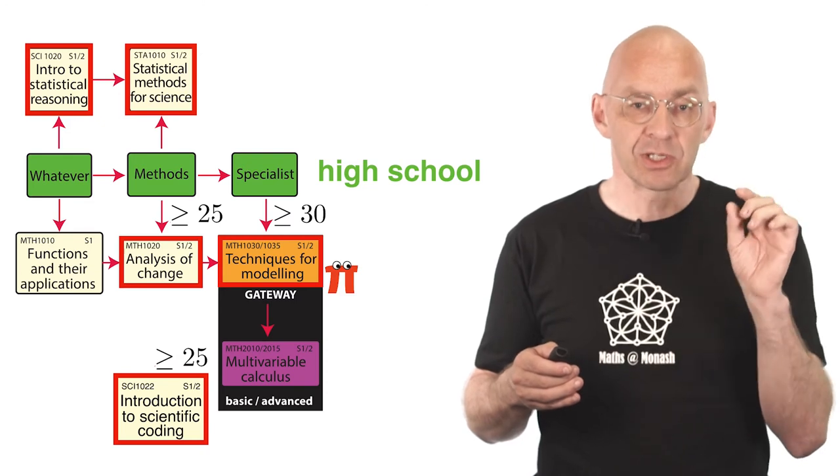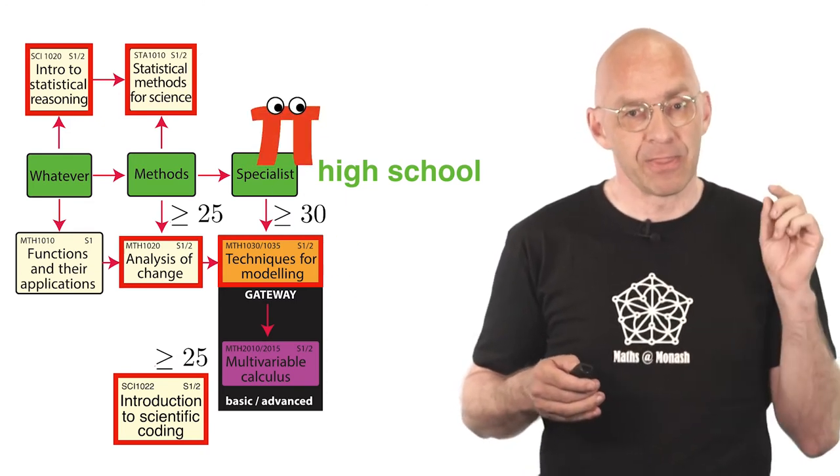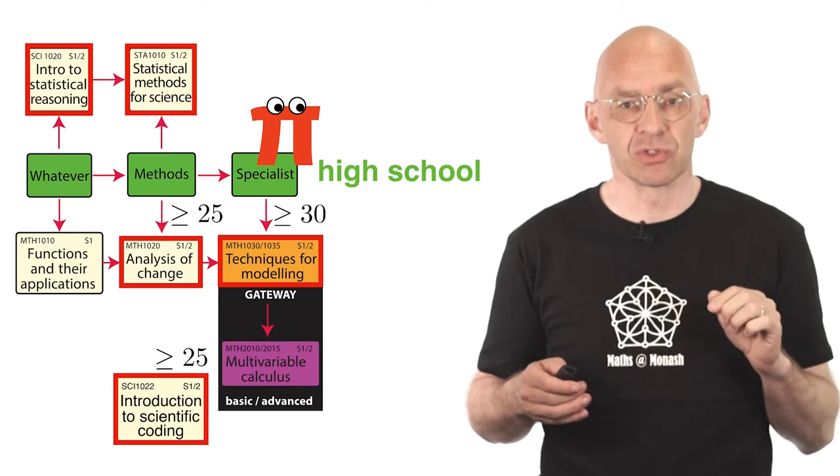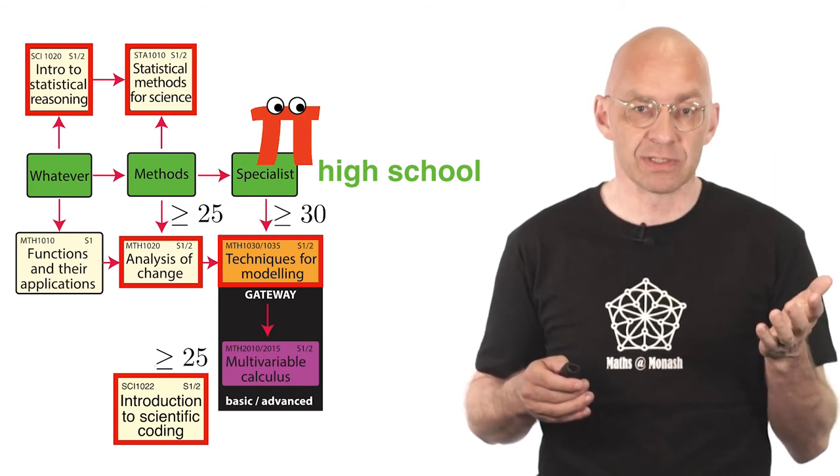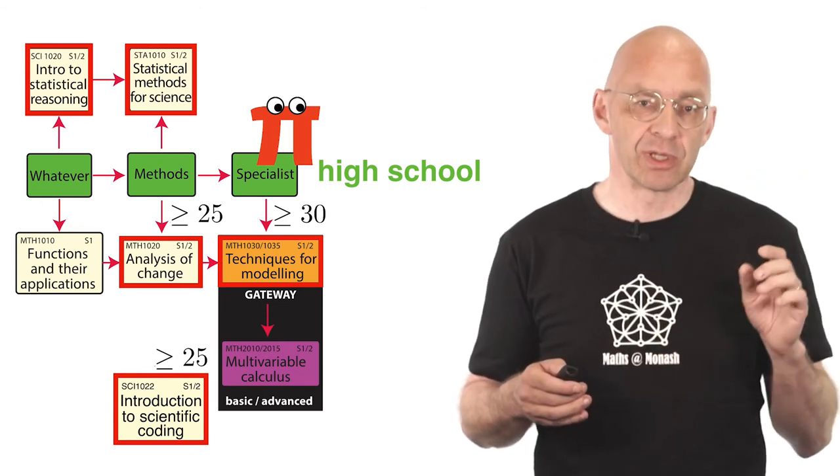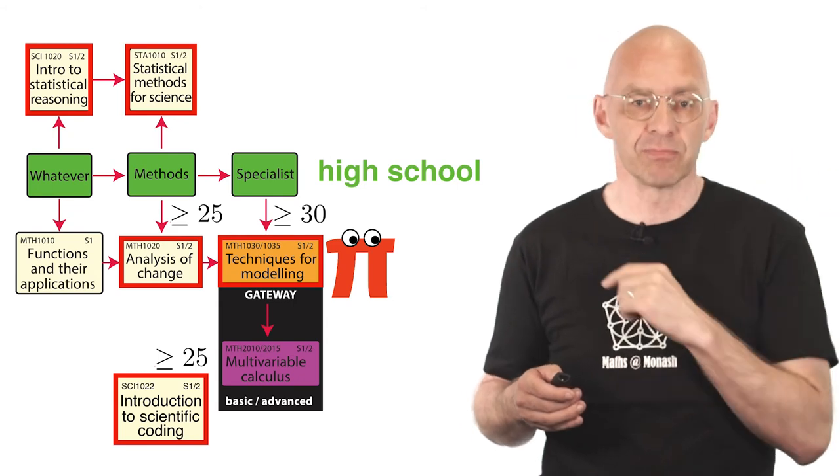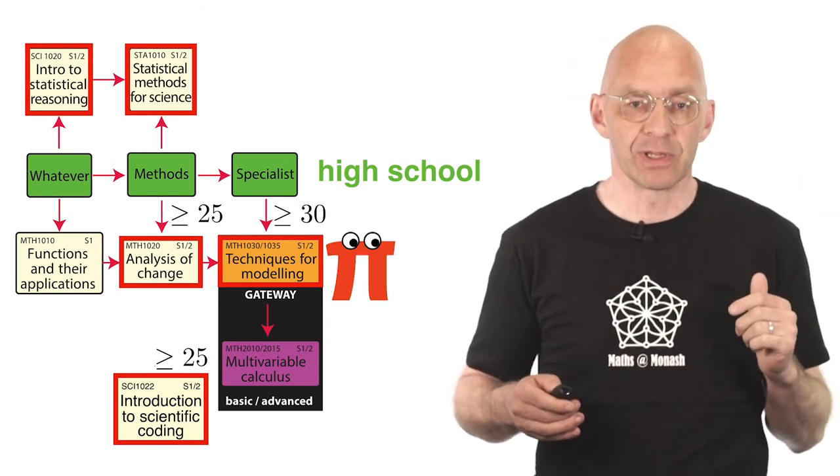If you arrive at Monash with specialist 3-4 or equivalent maths under your belt, then if in addition you scored at least a raw 30 in specialist 3-4, you should enroll straight away in the orange gateway unit techniques for modeling and follow this up with the purple unit multivariable calculus in the following semester.